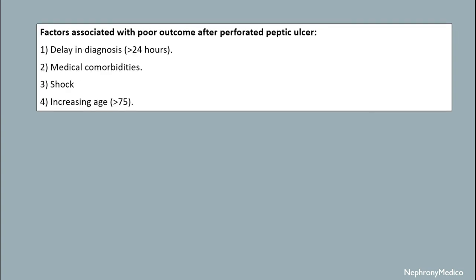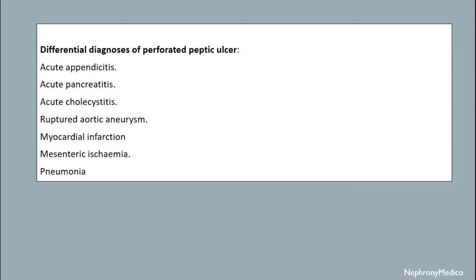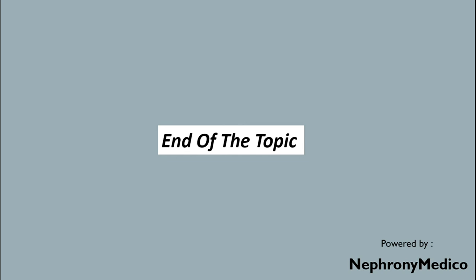Factors associated with poor outcomes after perforated peptic ulcer include delay in diagnosis of more than 24 hours, medical comorbidities, shock, and increasing age of more than 75 years. Differential diagnosis includes acute appendicitis, acute pancreatitis, acute cholecystitis, ruptured aortic aneurysm, myocardial infarction, mesenteric ischemia, and pneumonia.